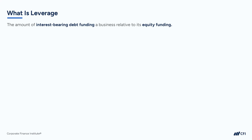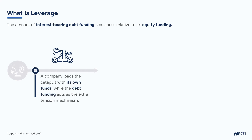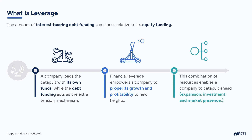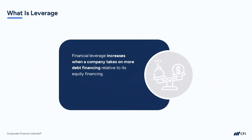Financial leverage for a company can be, metaphorically at least, compared to something like a catapult. Just as a catapult allows you to launch a projectile much farther and with greater force than you could achieve by throwing it yourself, financial leverage empowers companies to propel their growth and profitability to new heights. Imagine that the company's own capital is the initial force you apply to load the catapult, while borrowed funds or debt act as the extra tension you add to the catapult's mechanism. When released strategically, the combination of resources enables the company to catapult itself ahead in terms of expansion, investment, and market presence. Financial leverage increases when a company takes on more debt financing relative to its equity financing.